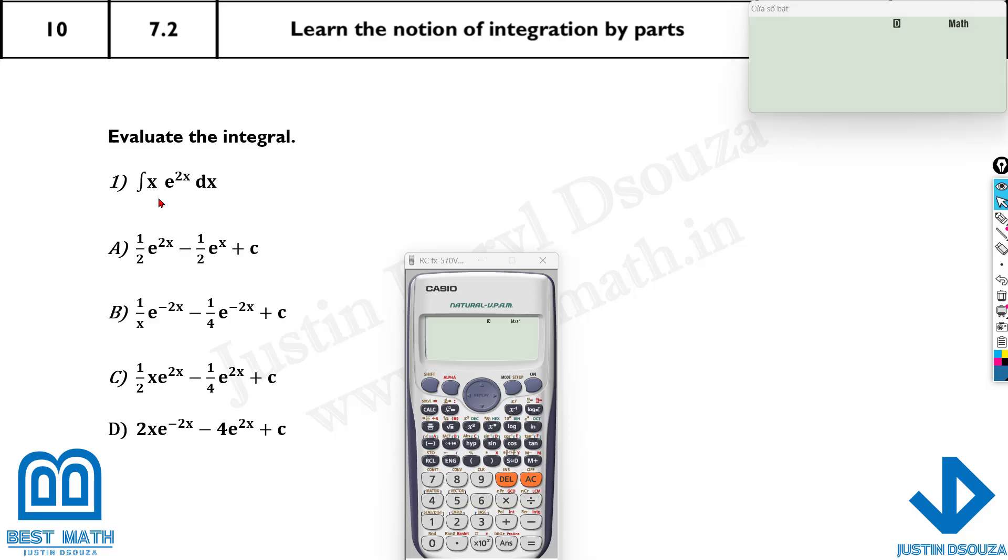It's better to put in the radian mode. See, this doesn't matter because there's no cosine or sine, no trigonometric functions. But it's better to put in radian mode. That's shift mode and four, that's radian mode.